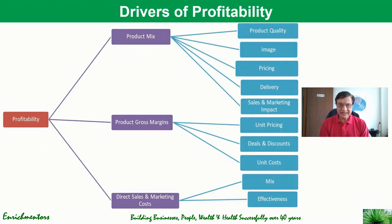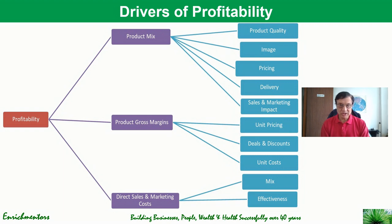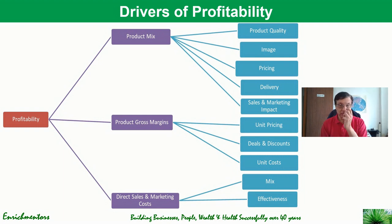Let's recap the drivers of profitability. As we saw, profitability in your area or your business is determined by three things: one, your product mix; two, the product gross margins; and three, the direct sales and marketing cost that you incur yourself.